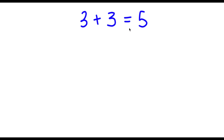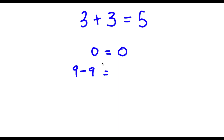Alright, so I have 3 plus 3 is equal to 5, and we want to prove this statement to be true. So first off, let's say we have 0 equals 0. For my left-hand side, 0 is the same thing as 9 minus 9, because anything minus itself is 0. And for my right-hand side, I'm going to rewrite 0 as 15 minus 15, which is also equal to 0. So I'm not going beyond the rules of mathematics here.